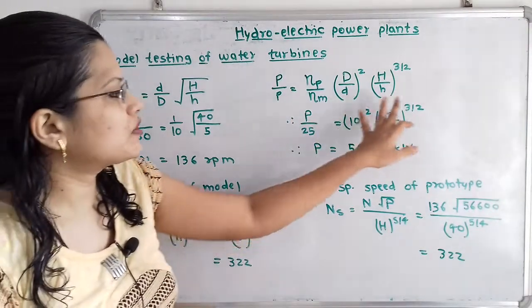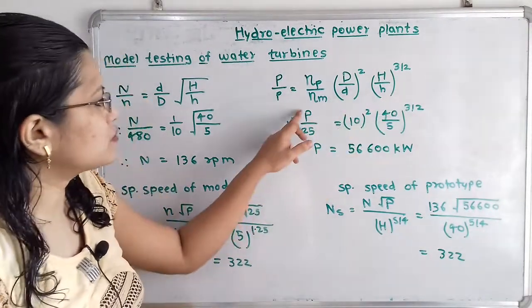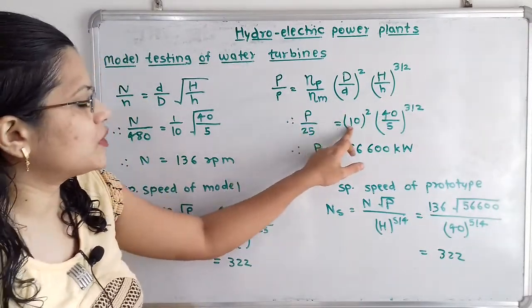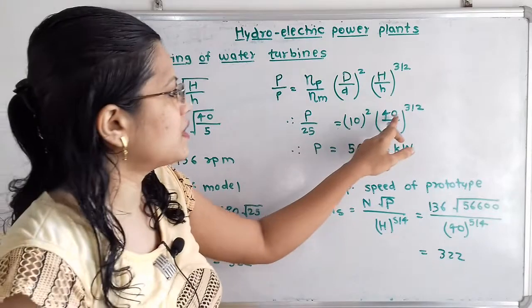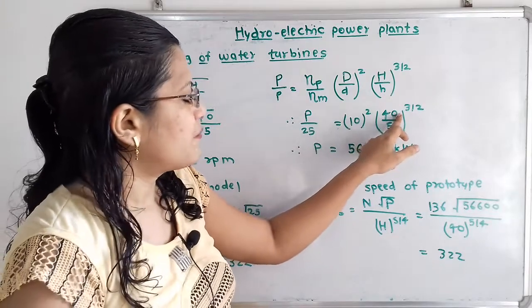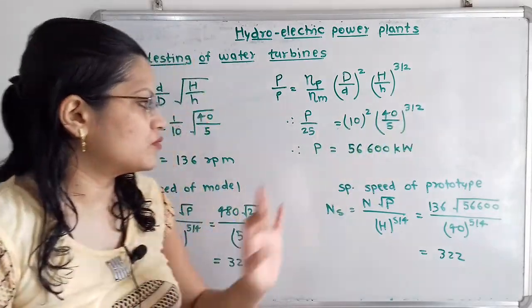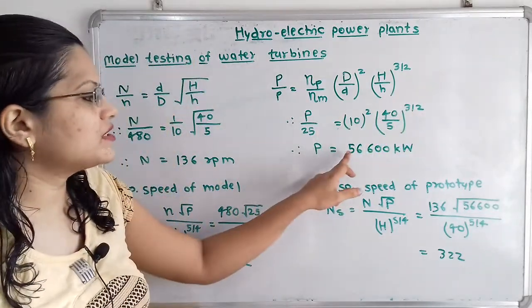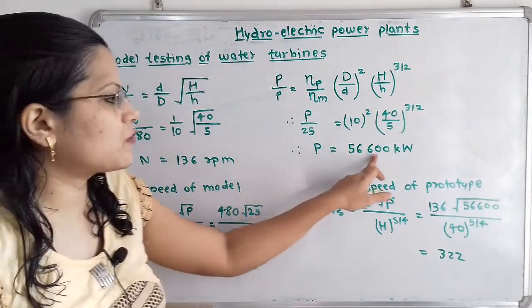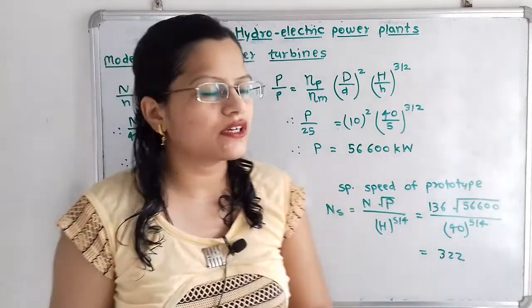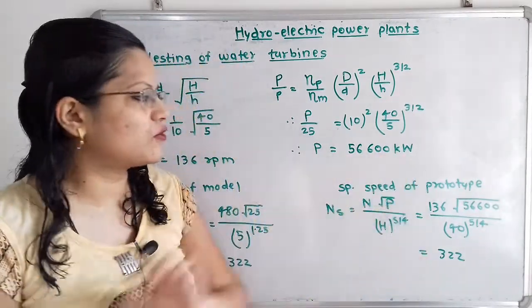Putting in the remaining values: P divided by 25 equals 10 squared multiplied by (40/5) raised to 3/2. Therefore, power P equals 56,600 kW.